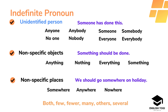Indefinite pronouns are also used to give meaning to the sentence by using non-specific words for places. For example: 'We should go somewhere on holiday.' Words like 'somewhere', 'anywhere' and 'nowhere' are examples of indefinite pronouns used for places. There are also other examples of indefinite pronouns such as: both, few, fewer, many, others and several.